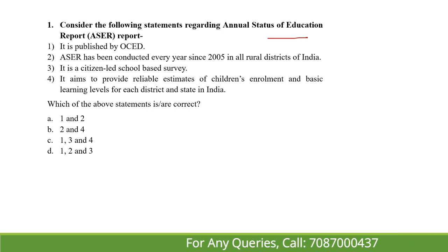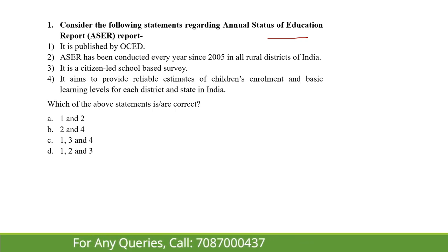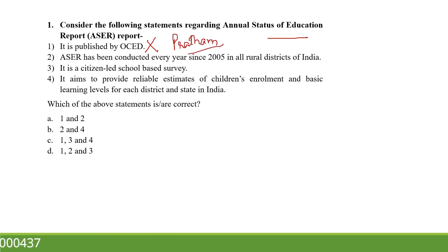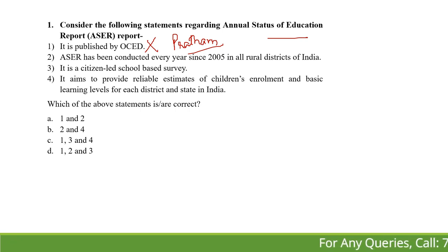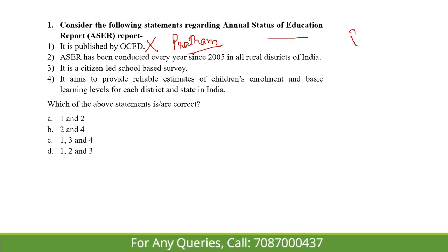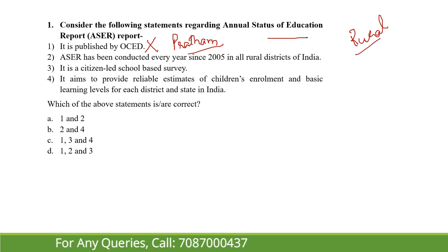In this question, we have to identify the correct statements. The first is wrong — the ASER report is not published by OECD but by an NGO called Pratham. The second statement — that ASER has been conducted every year since 2005 in rural districts of India — is right.